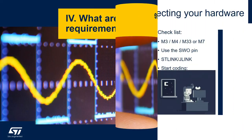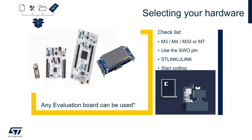What are the hardware requirements? The great news is that pretty much every evaluation board we have can be used, as long as we meet the requirements on our checklist. First, you need to make sure your Cortex-M is either a Cortex-M3, M4, M33, or M7, because those are the cores that have the trace macrocell so we can use the Serial Wire Output pin. We also need to make sure we are using either the ST-Link that comes with the Nucleo and Discovery boards, or we are using the J-Link. And then what is left is to start coding.